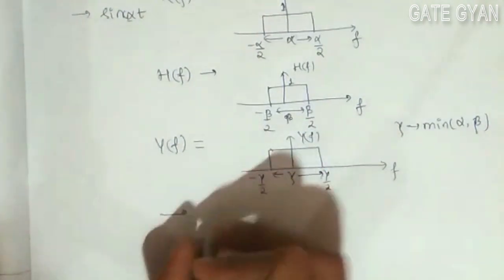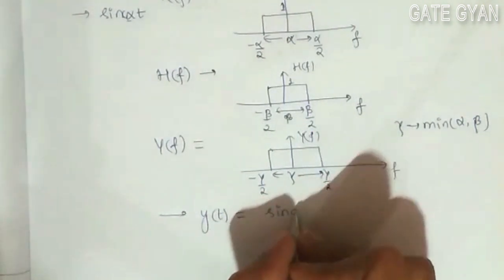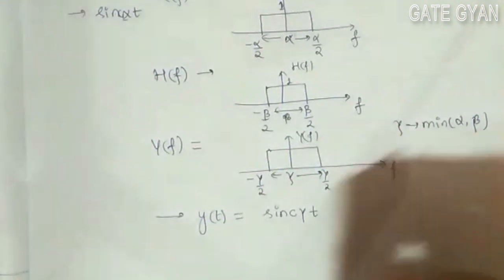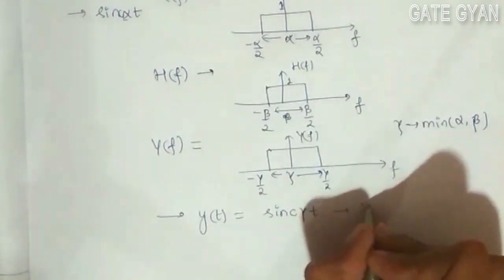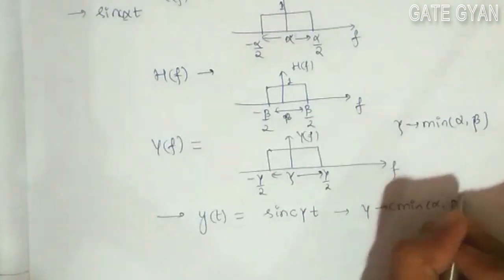So its reciprocal, that is my y(t), will be again a sinc pulse. Let it be sinc(γt). Then my gamma must be minimum of alpha comma beta.